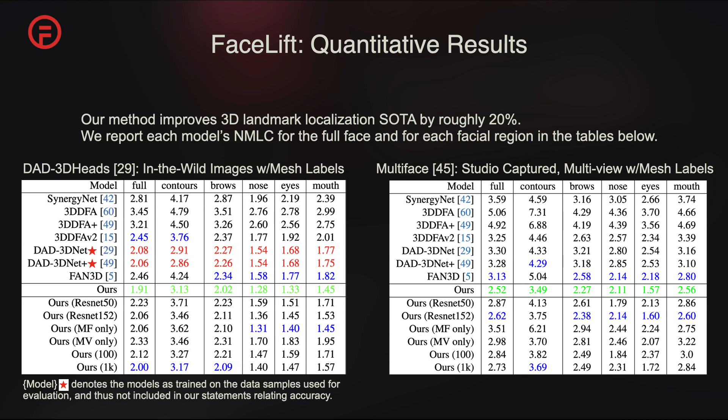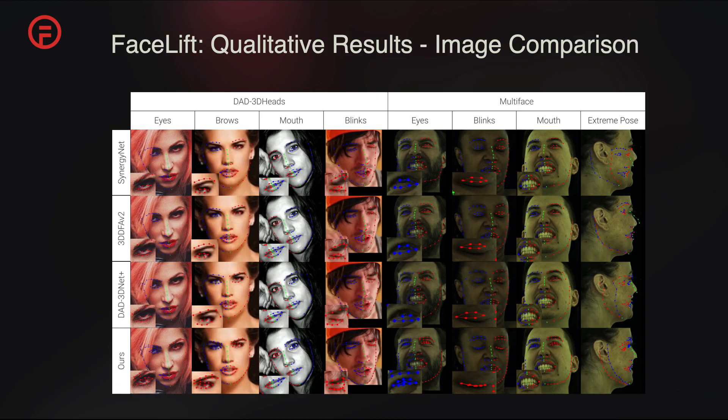We compare on in-the-wild images with mesh labels from the DAD 3D Heads dataset, and multi-view studio-captured videos with mesh labels from the multi-phase dataset. Our method shows significant improvements, outperforming state-of-the-art models by approximately 20%. Visual comparisons on images from various datasets illustrate our model's superior capability in capturing fine-scale details and maintaining global alignment even in challenging pose scenarios.